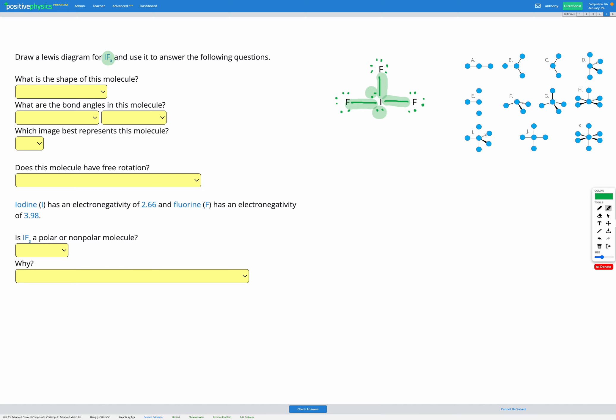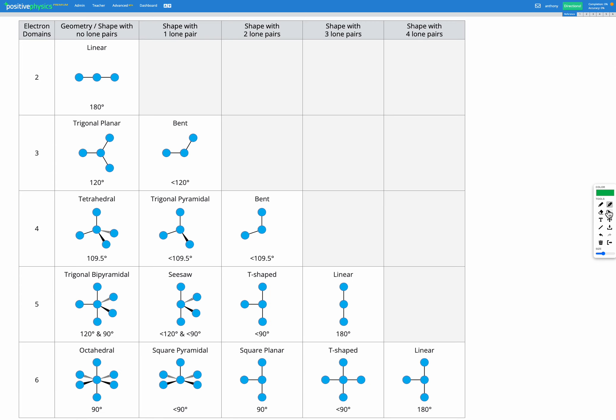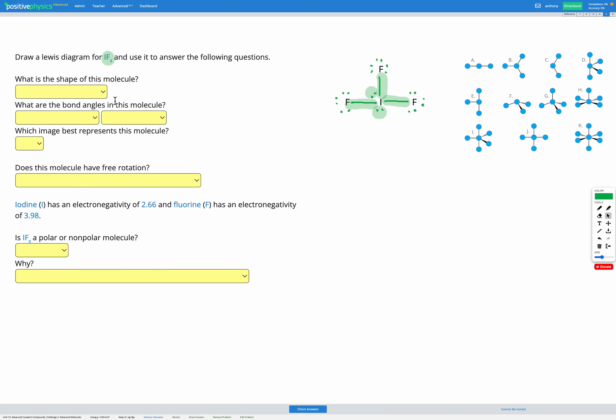Heading to our reference sheet, we have five electron domains looking in that first column and we had two lone pairs. So that gets us to T-shaped, which has that T-shaped molecule we can see there with angles of slightly less than 90 degrees. So back to our question, the shape is T-shaped, the angles are slightly less than 90 degrees, and the image that shows that from our selection is image E.